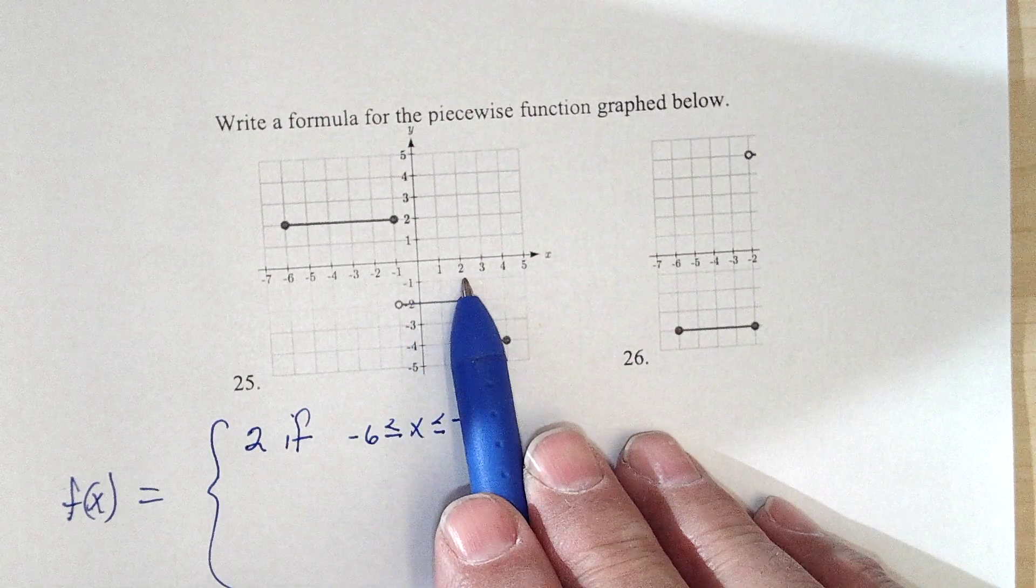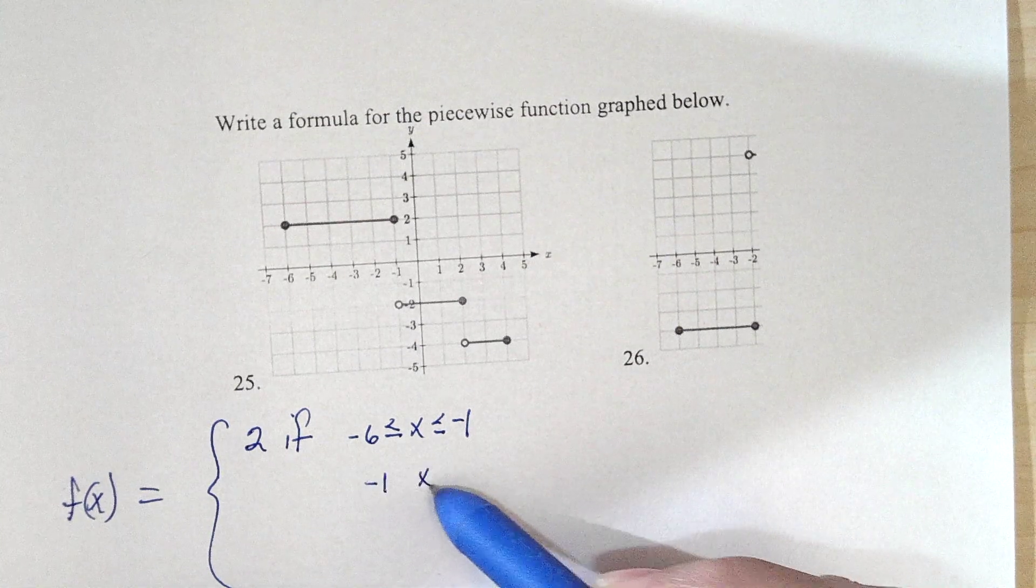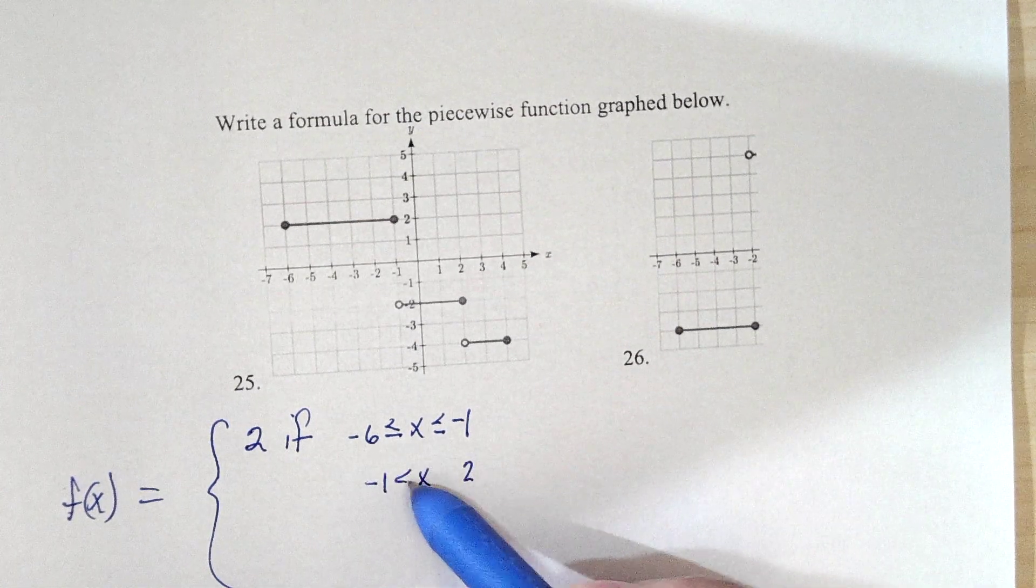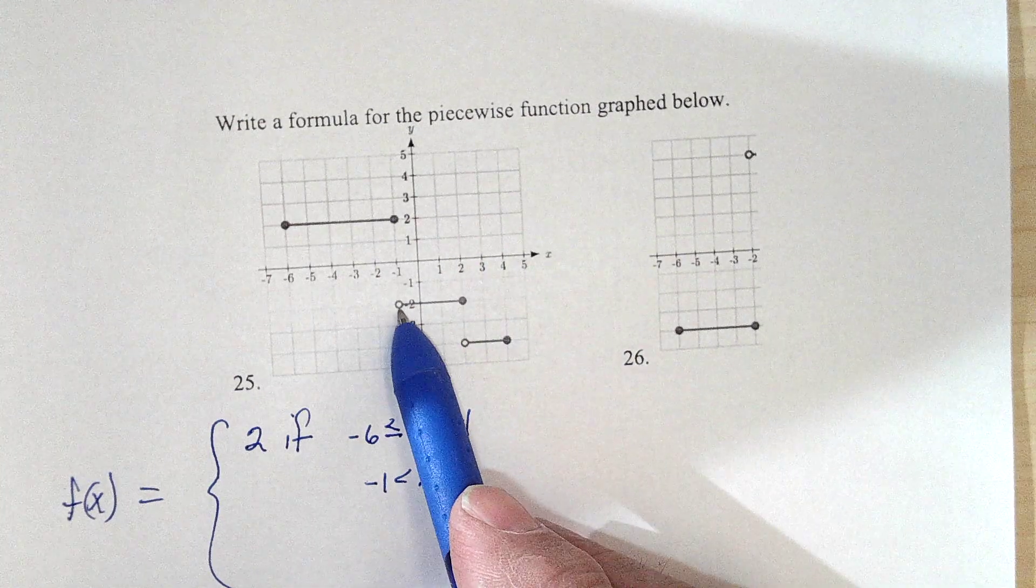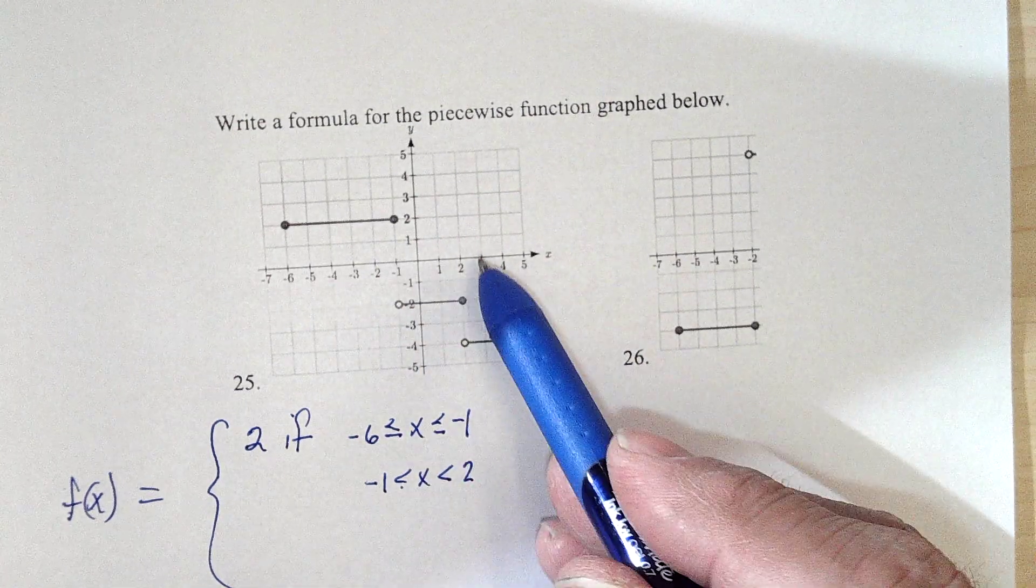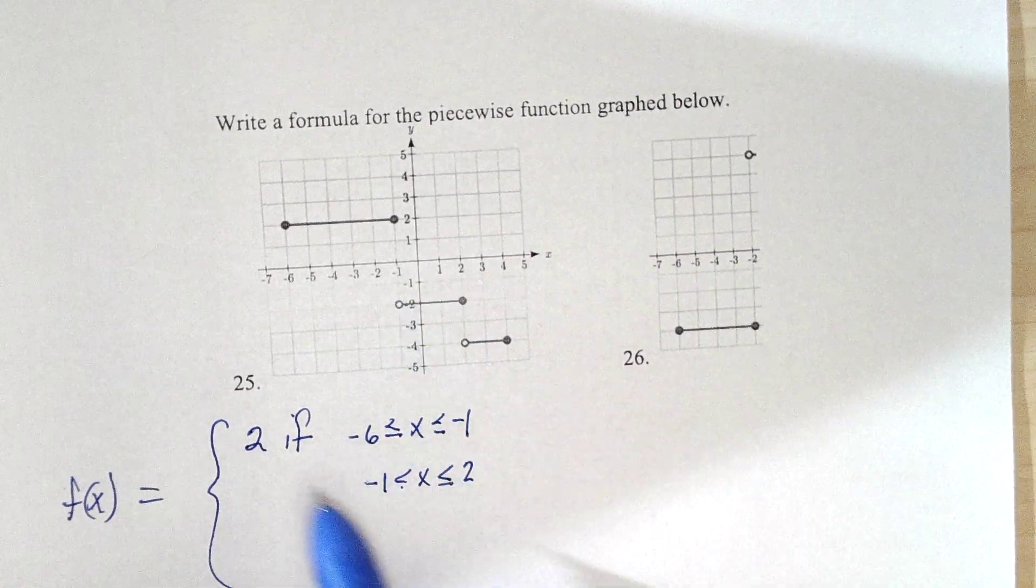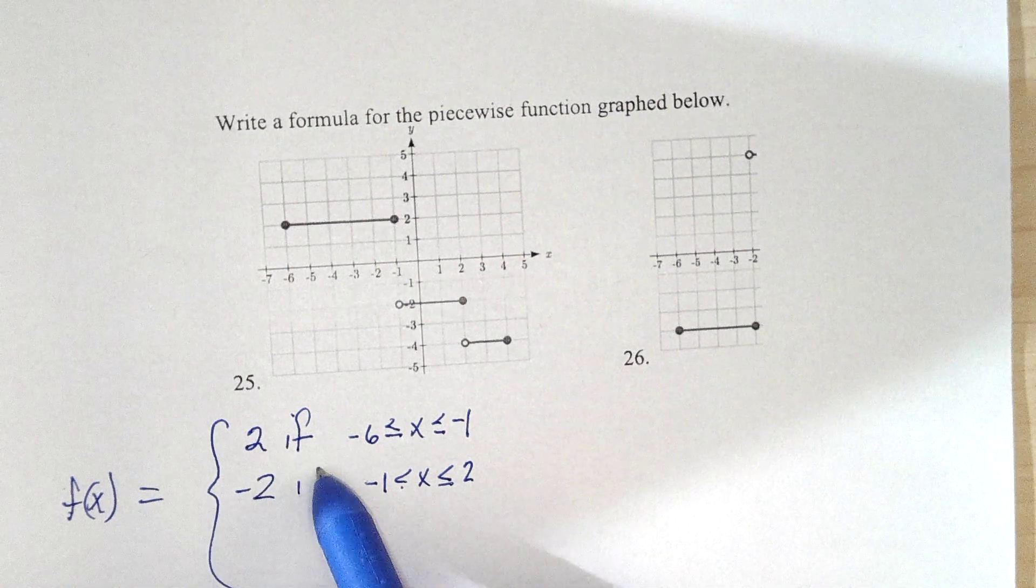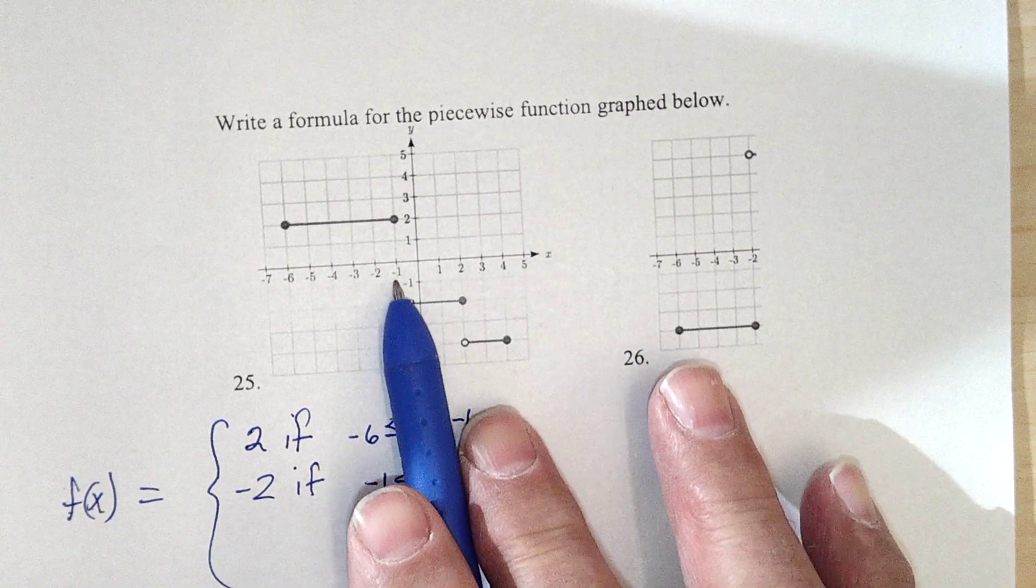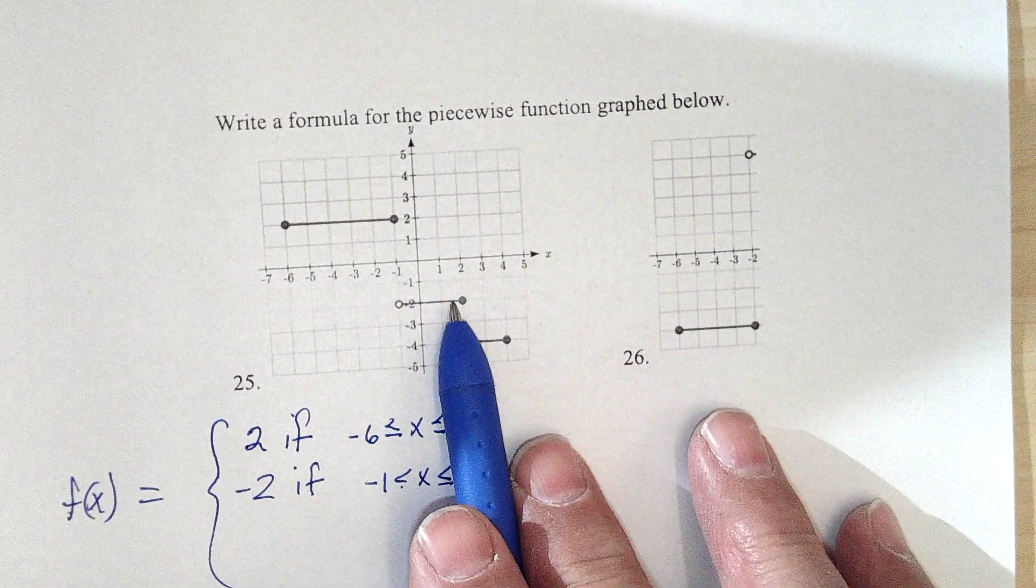From minus 1 to 2 is the next window. And we're not equal on the minus 1 side, but we are equal on the 2 side. And that height is negative 2. As long as the x's are between minus 1 and 2, we'll have a height, the y height of 2.